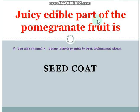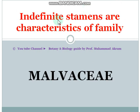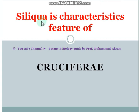The juicy edible part of the pomegranate fruit is the seed coat. Indefinite stamens — meaning many stamens — are a special characteristic of the family Malvaceae, the cotton family; Gossypium herbaceum belongs to this family. Siliqua is a characteristic fruit of the family Cruciferae.